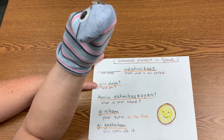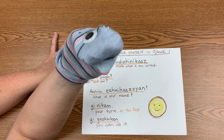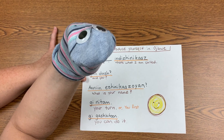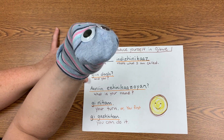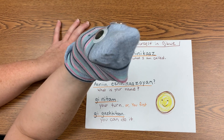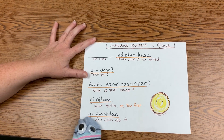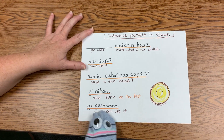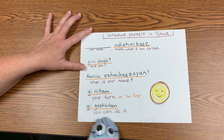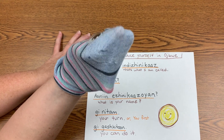Next we have 'you can do it.' The 'ya' at the beginning means 'you' this time. Ya-gash-genitum — you can do it. All right, we'll see you again next time!